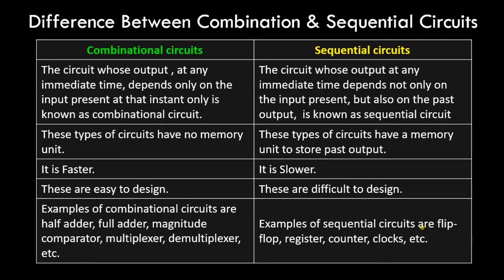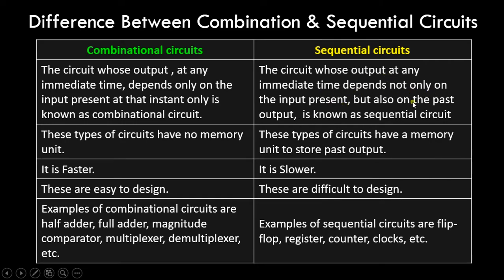A key difference between combinational and sequential circuits: a combinational circuit's output at any instant depends only on the input present at that instant — it does not depend on the previous input or past state. But in a sequential circuit, the output depends not only on the current input but also on the past output. These circuits have no memory unit (combinational), while sequential circuits have a memory unit to store the past output.